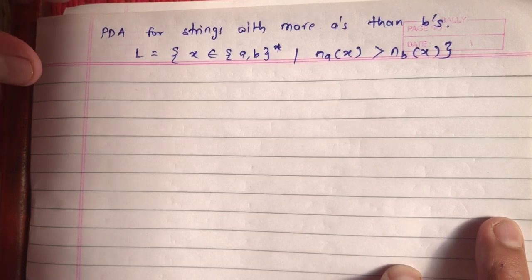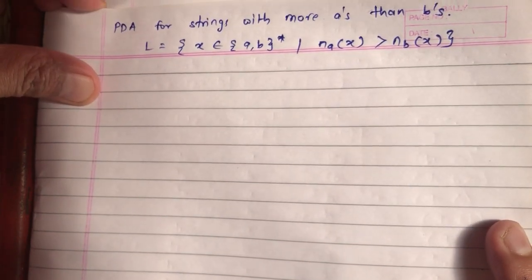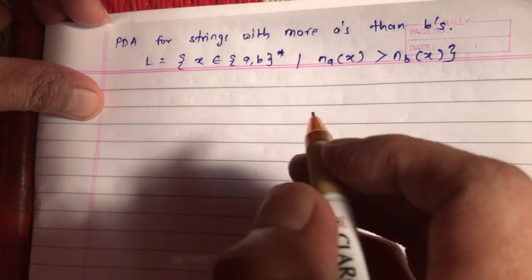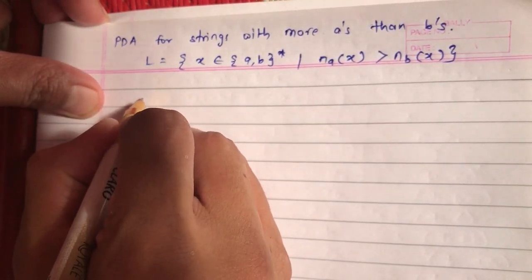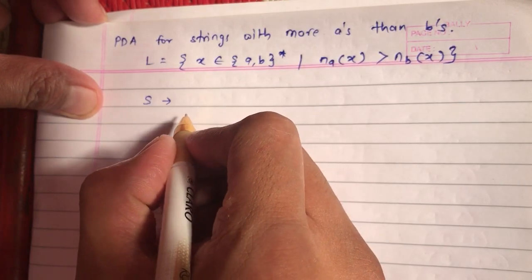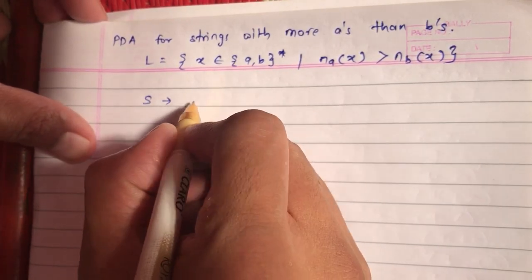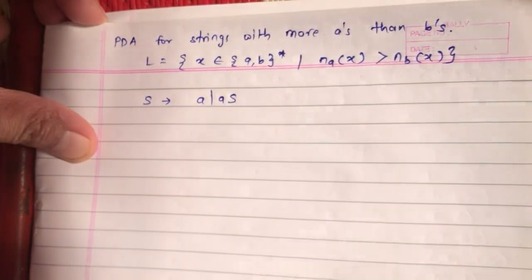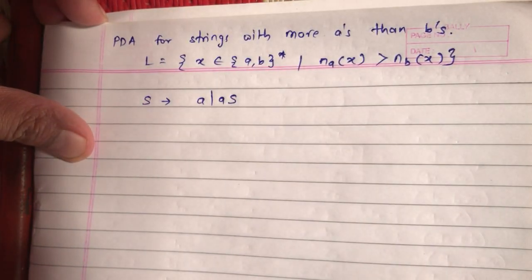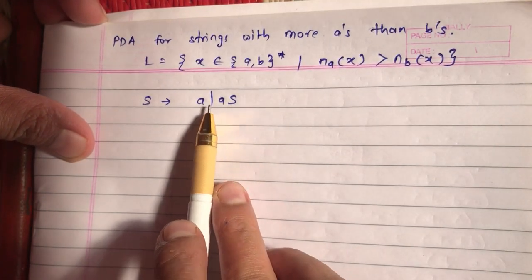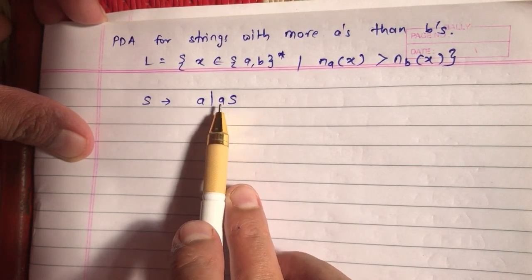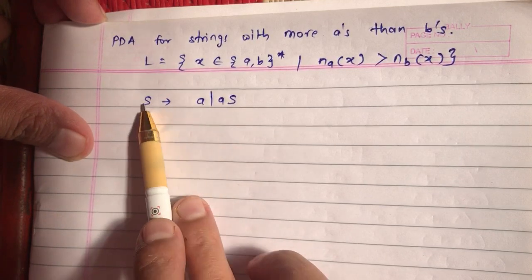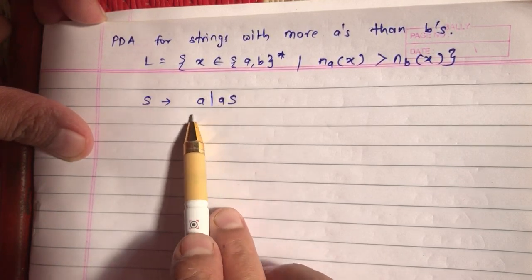First we need to construct grammar for this, because we have to convert grammar into PDA. We all know that the number of A's should be more than number of B's. For getting more A's, we should have a symbol for repeating A's. If I want one A, I can write only A. If I want two A's, I can write AS followed by A. If I want three A's, two AS followed by A. This particular grammar production rule will help me to repeat any number of A's.